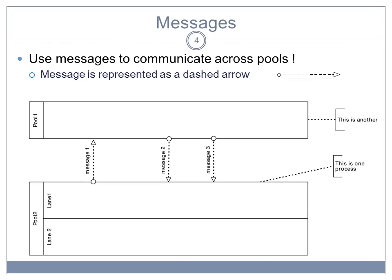So looking at the diagram here, you see two pools that represent two participants in a process. The two participants are independent in the sense that each of the participants has its own process, but nevertheless there is some coordination needed across the two participants. So for example, in pool two, when a task is finished, then the participant in pool two might send a message to the participant in pool one.